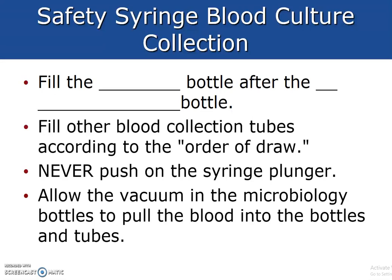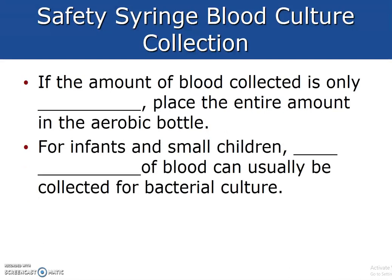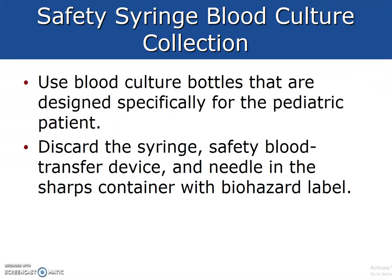Fill other blood collection tubes according to order of draw after that point. Never push on the syringe plunger — allow the vacuum in the microbiology bottles to pull the blood into the bottles and tubes. If the amount of blood collected is 5 mls or less, place the entire amount in the aerobic bottle. For infants and children, about 1 to 3 mls of blood can usually be collected for bacterial culture. Use blood culture bottles designed specifically for pediatric patients.